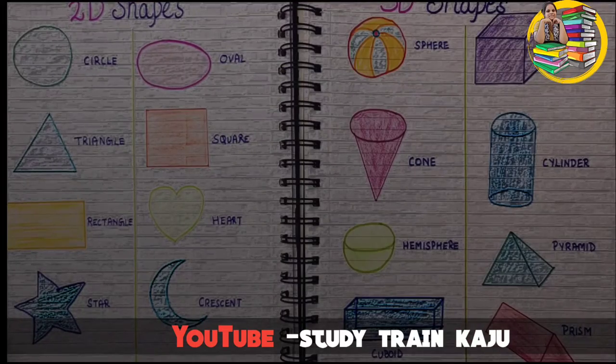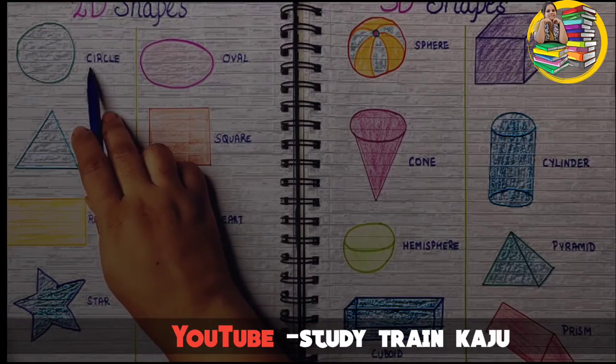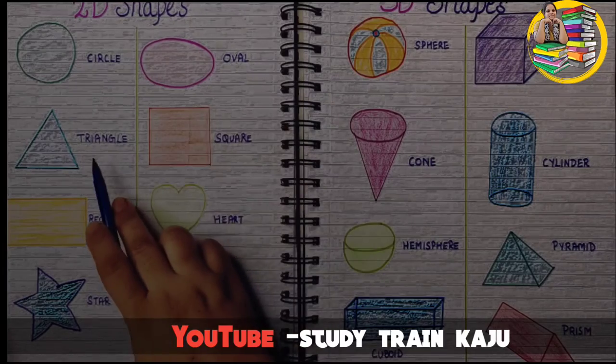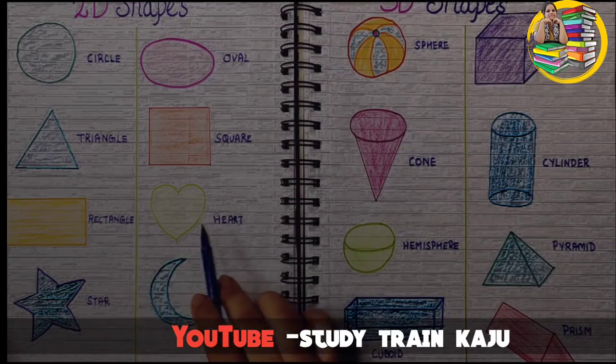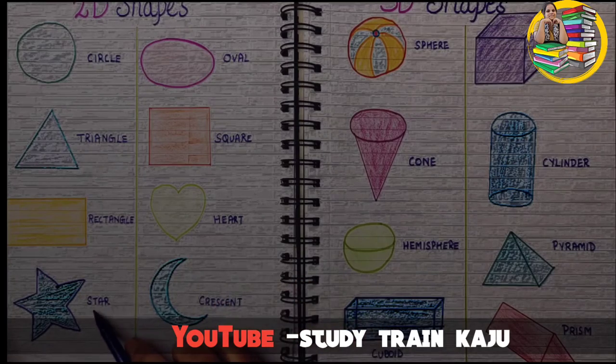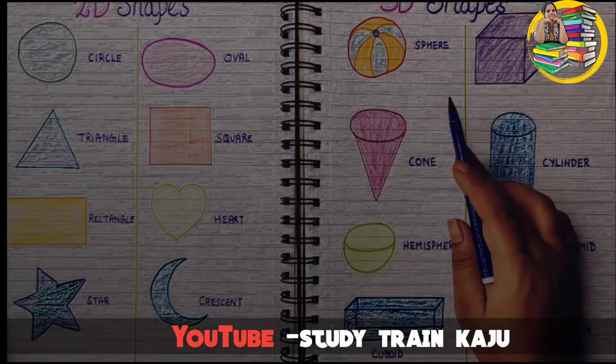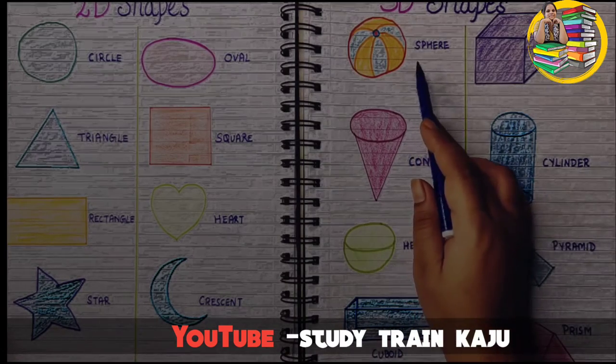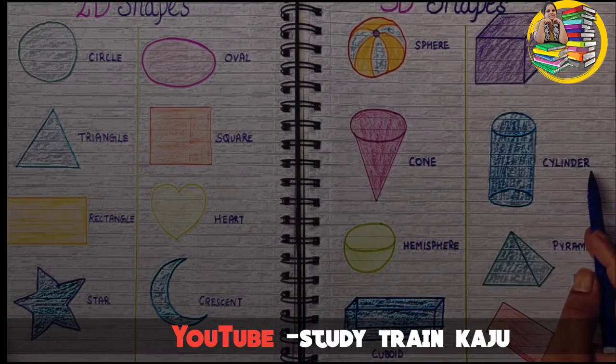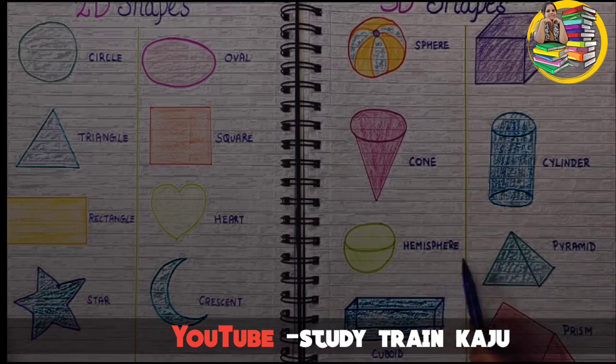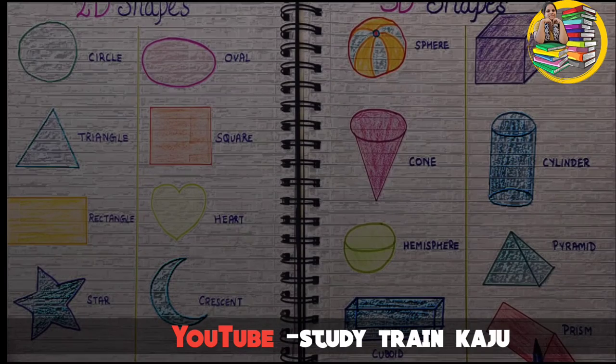Now, let's quickly revise all the shapes. First, the 2D shapes: Circle, Oval, Triangle, Square, Rectangle, Heart, Star, and Crescent. Next, let's look at the 3D shapes: Sphere, Cube, Cone, Cylinder, Hemisphere, Pyramid, Cuboid, and Prism shape.